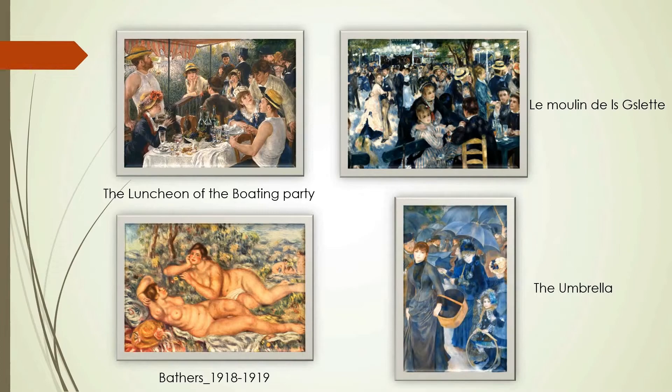Among his early masterpieces are 'Moulin de la Galette' and 'Luncheon of the Boating Party.' A visit to Italy introduced him to Raphael and the expressive force of clear line and smooth painting. By the mid-1880s, he had broken with Impressionism to employ a more disciplined formal technique, in which he emphasized volumes, forms, contours, and lines.